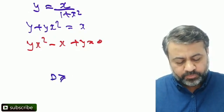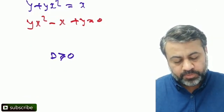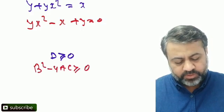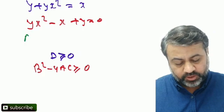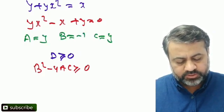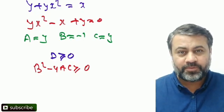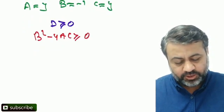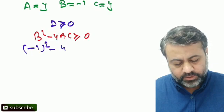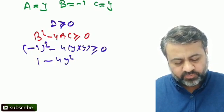Since this is a quadratic equation in x, the discriminant must be greater than or equal to zero. That means b² - 4ac ≥ 0. Here, a = y, b = -1, and c = y. So we need: (-1)² - 4(y)(y) ≥ 0, which gives 1 - 4y² ≥ 0.